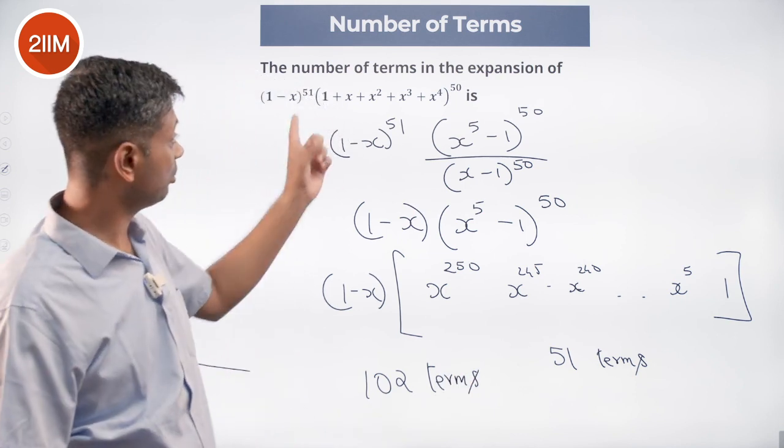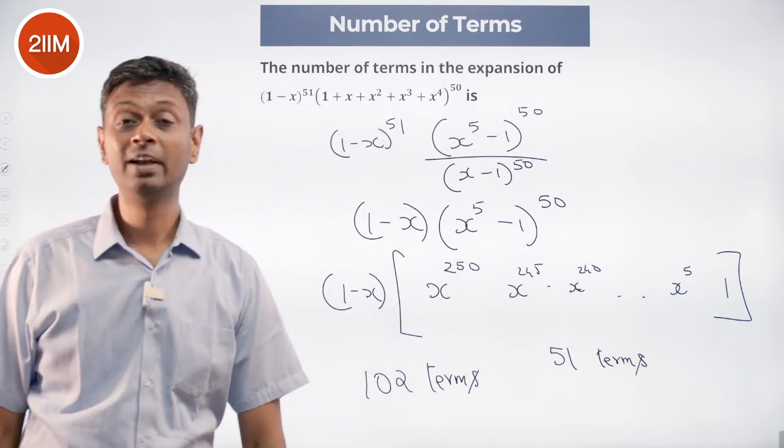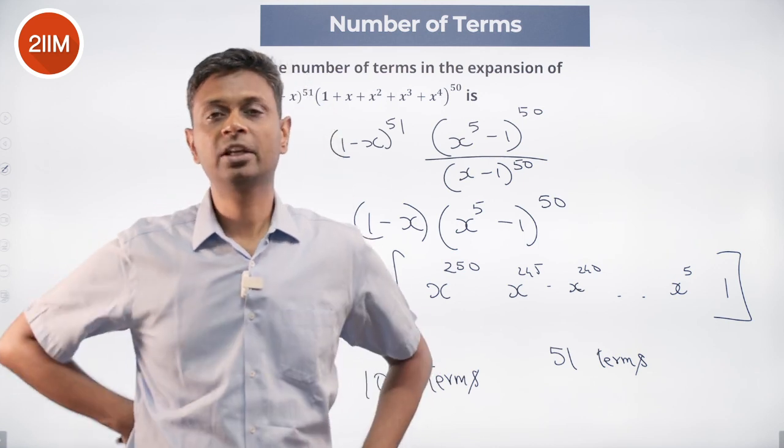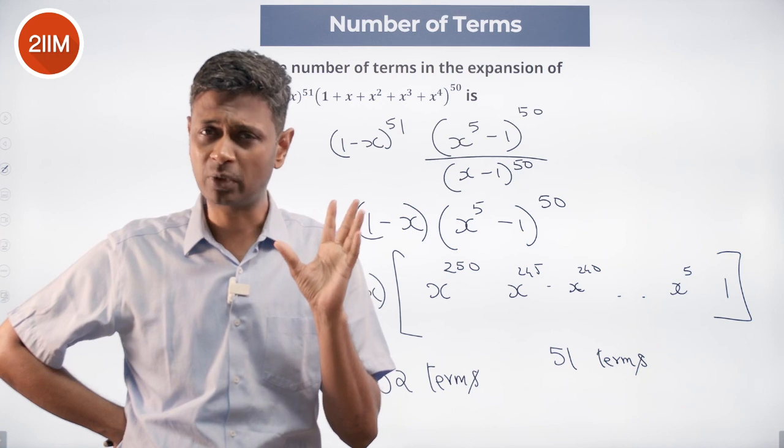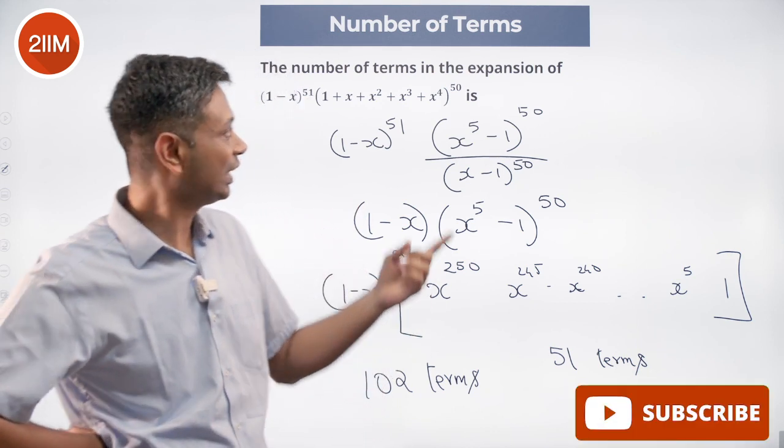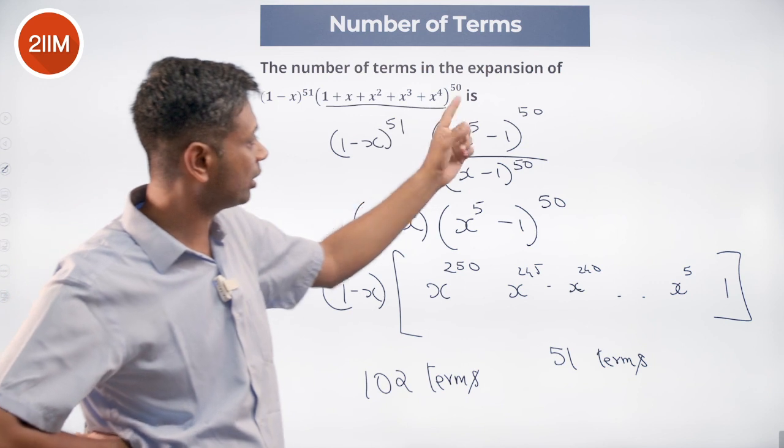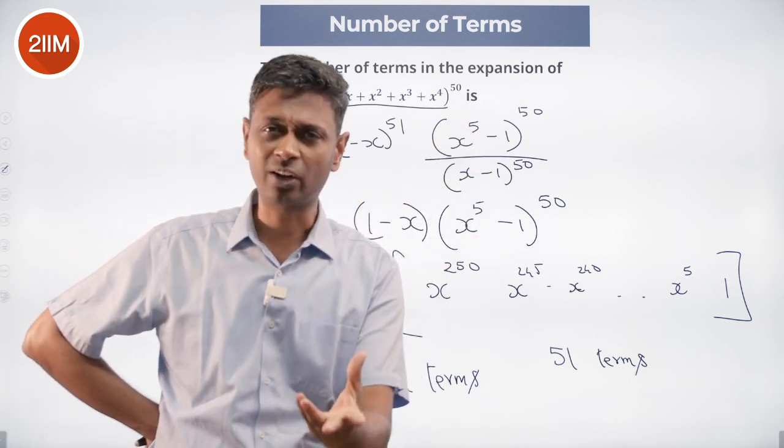Just knowing that 1 plus x plus x square plus x cube plus x power 4 can be thought of as x power 5 minus 1 by x minus 1, super useful, or 1 minus x power 5 by 1 minus x, super useful. So if you can think of this as x power 5 minus 1 by x minus 1, this question just gets unlocked.